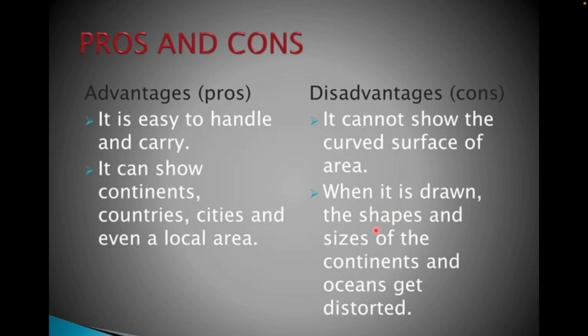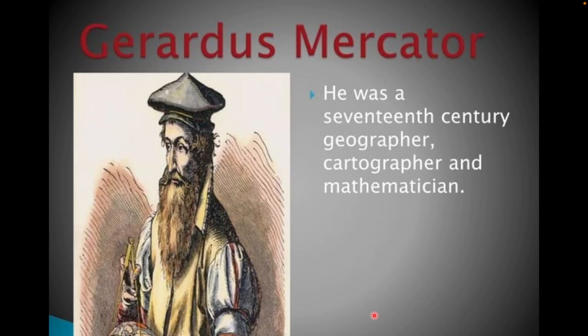The disadvantages are that we cannot make a 3D structure like we can with the globe. Also, the shape and size of continents and oceans get distorted because it is made on paper, which is a flattened shape rather than a circular shape, so the continent and ocean figures are not completely accurate.